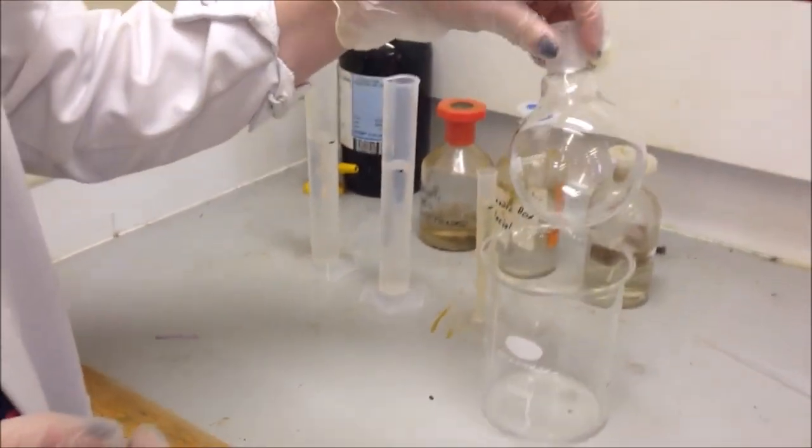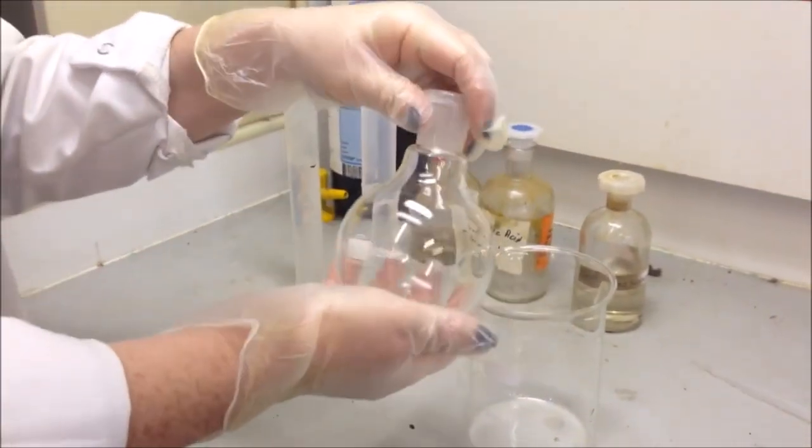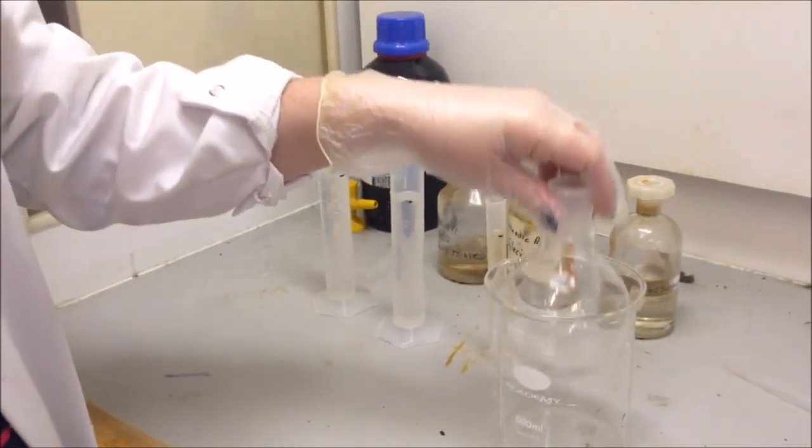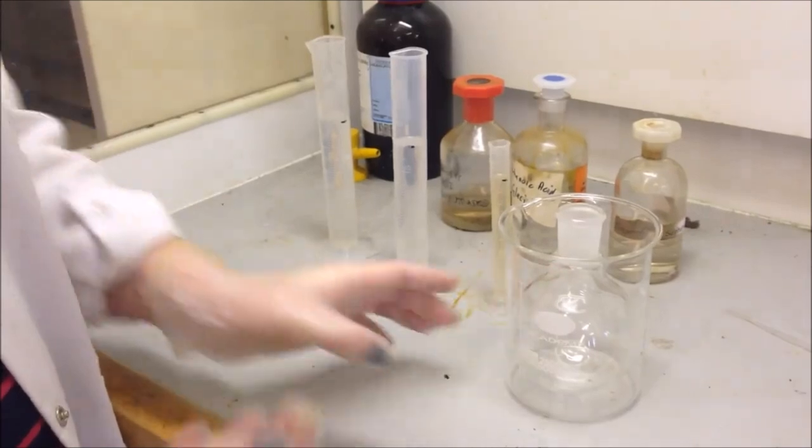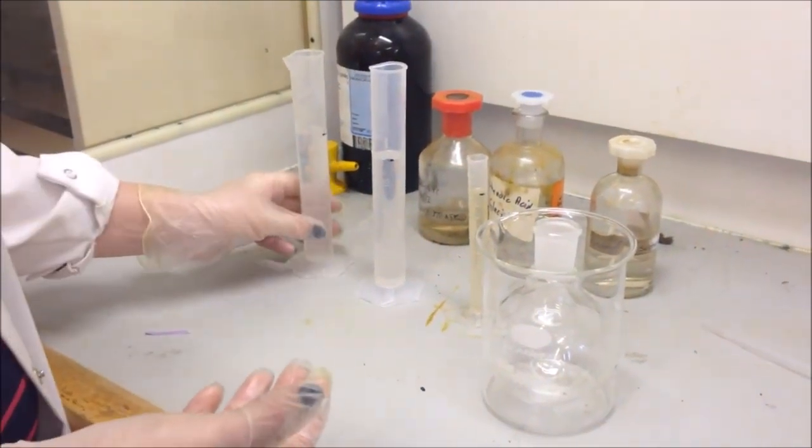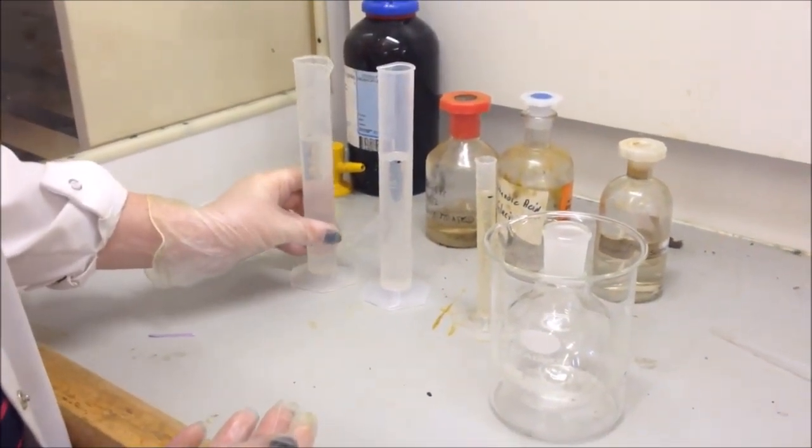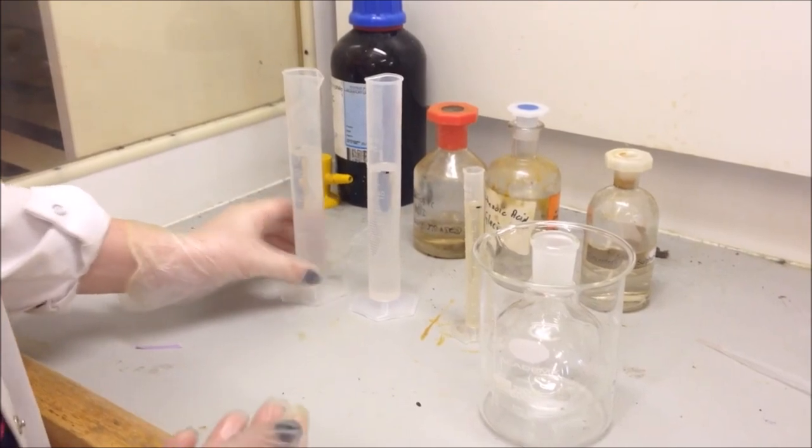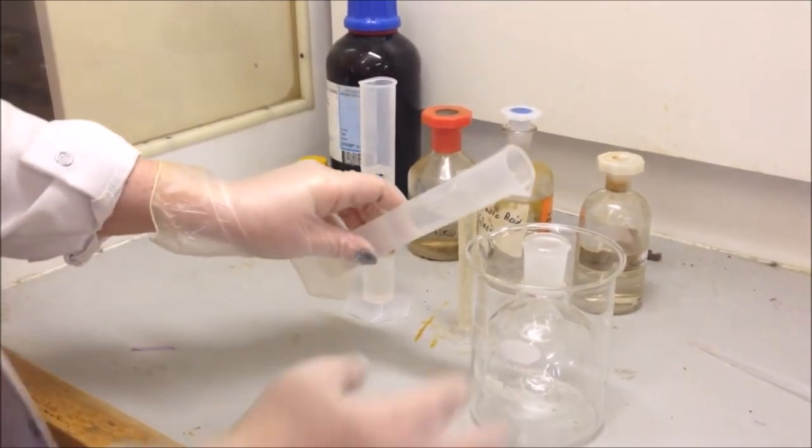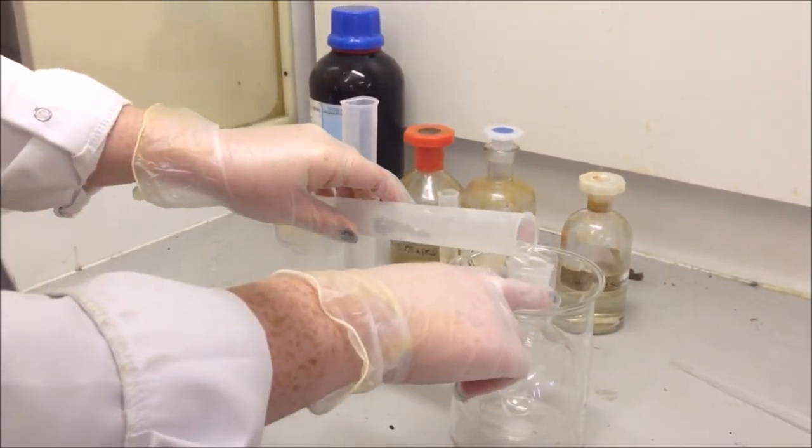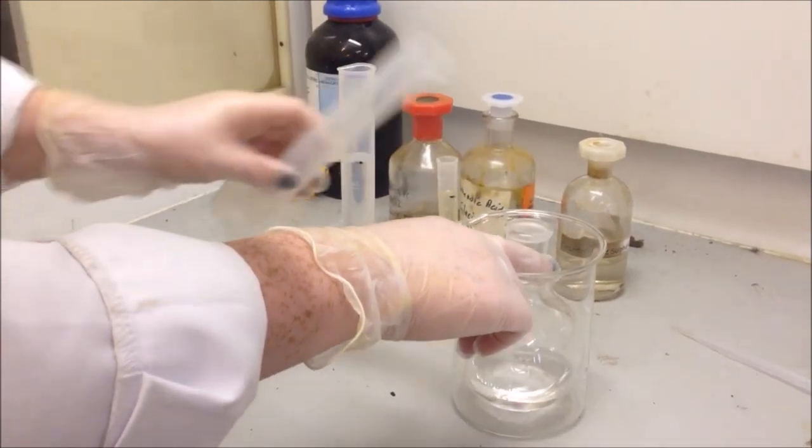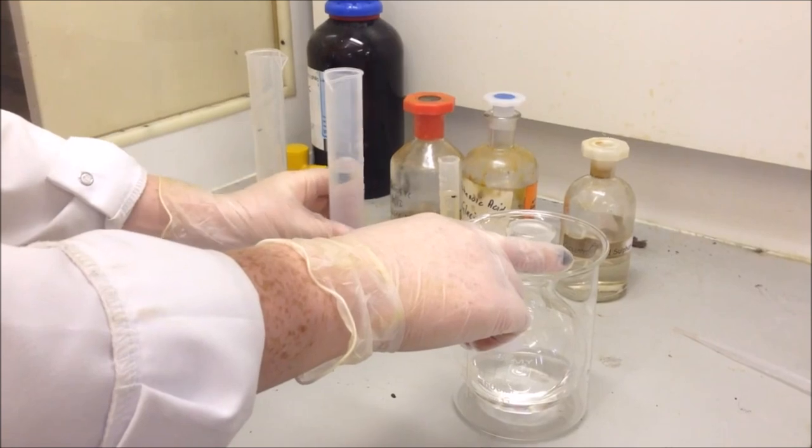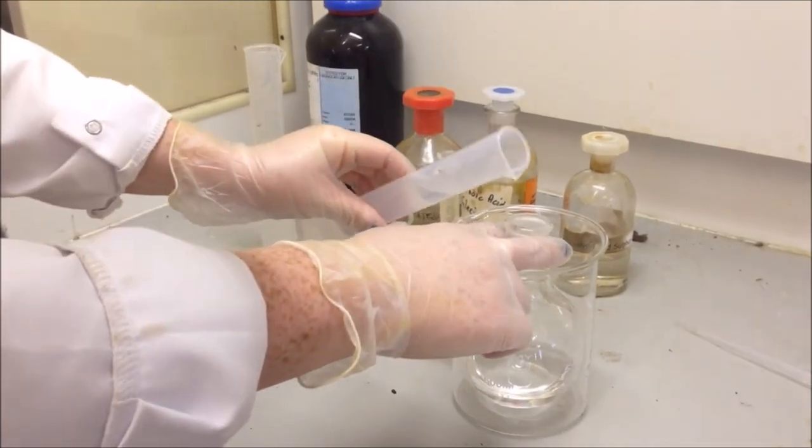Here we're going to be using a round bottom flask. Obviously these are round, so to hold that steady I'm just going to put it in a large beaker to hold it as a secure base. We are going to make an organic solvent, so I have 50 cm³ of ethanol and 50 cm³ of glacial ethanoic acid.